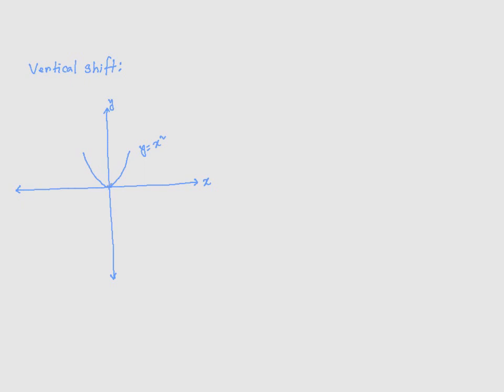This is a parabola going through the origin right here, 0, 0. Now, I am going to make some changes to this function so that it moves up or down.